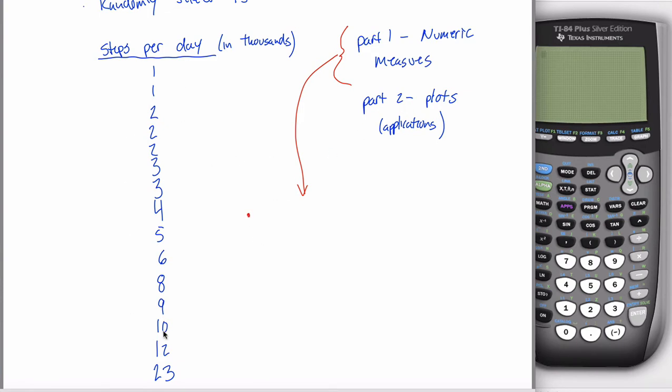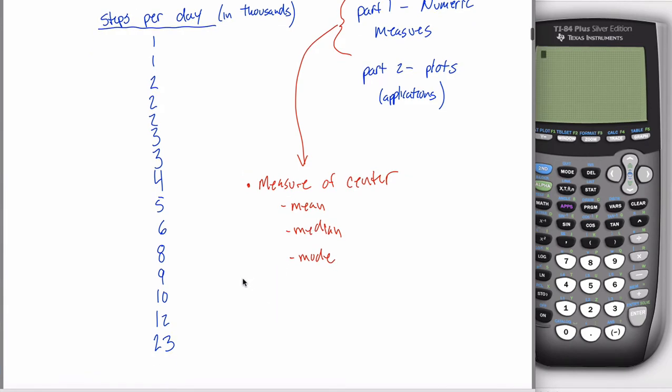If I asked you, like, summarize this data with a number, like one number that kind of represents the rest of these numbers, what comes to most people's mind is a measure of center. And what do you mean by a measure of center? Well, in this class, there's going to be three different measures of center, the mean, the median, and the mode. And what you'll see is two of those three are fairly important, the mean and the median. The mode, we don't really care a whole lot about, and I'll explain why.